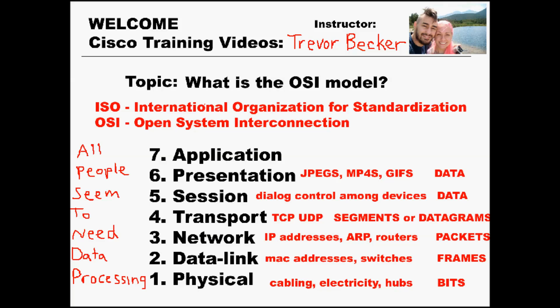Layer six is the presentation layer. This handles the structure and negotiation of data transfers to the application layer. This is not a heavily tested layer on the CCNA certification. Items that exist at the presentation layer include JPEGs, MP4s, and GIFs, for example. The protocol data unit is also referred to as data at this layer.